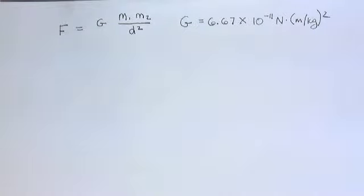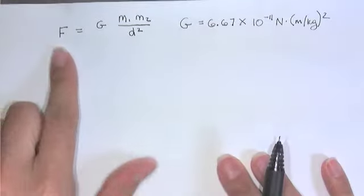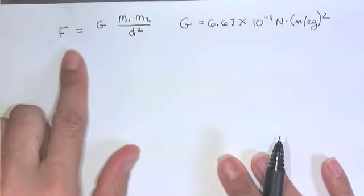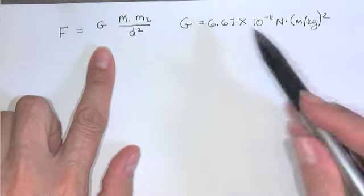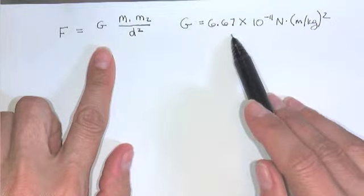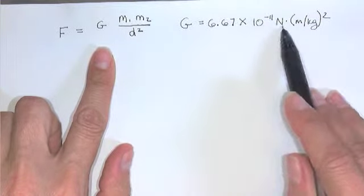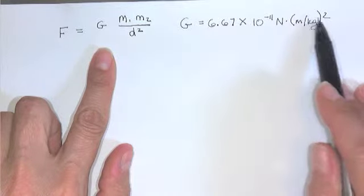Okay, so we're going to talk about universal gravitation, and we're going to do an example using our law of universal gravitation. That looks like this equation, where the force between two objects is equal to our constant G, which is equal to 6.67 times 10 to the minus 11 newtons meters kilograms squared.